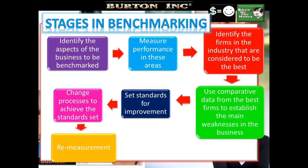Thirdly, identify the firms in the industry considered to be the best. This process might be assessed by management consultants or by benchmarking schemes operated by government or industry organisations. Stage four is where data comes into play — using comparative data from the best firms to establish the main weaknesses in the business. This data may be obtained from firms by mutual agreement, from published accounts, specialist industry publications, and contact with customers or suppliers. Stage five: set standards for improvement, which might be the standards set by the best firms, or set even higher to create a competitive advantage.